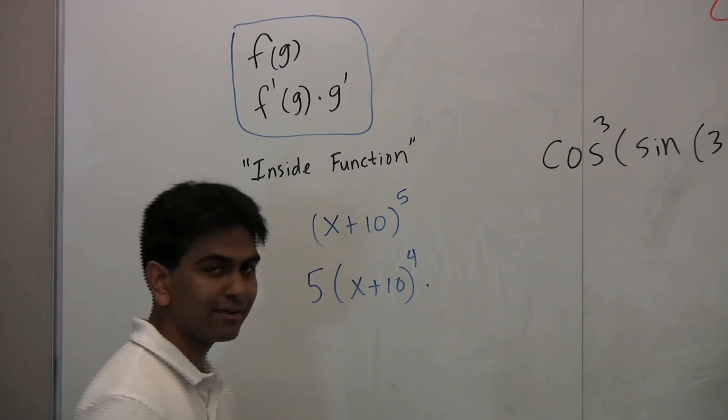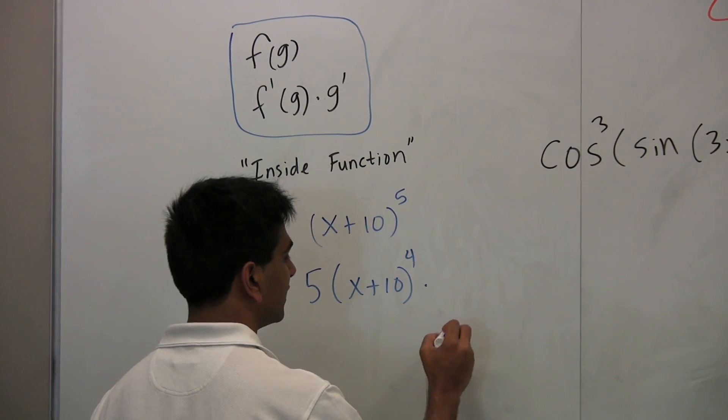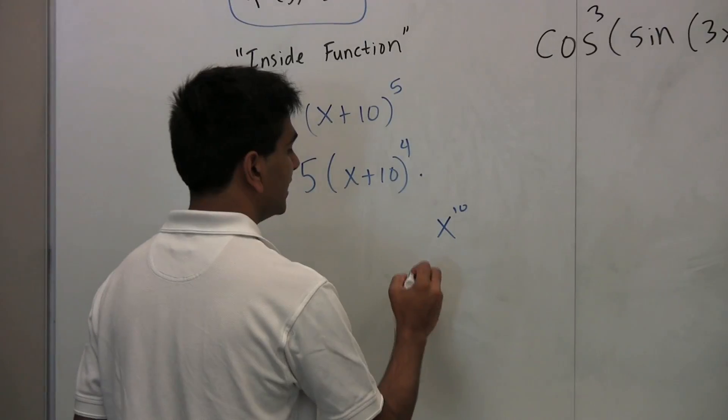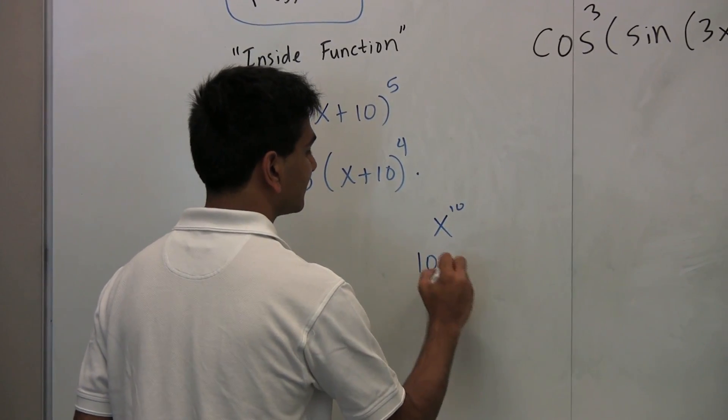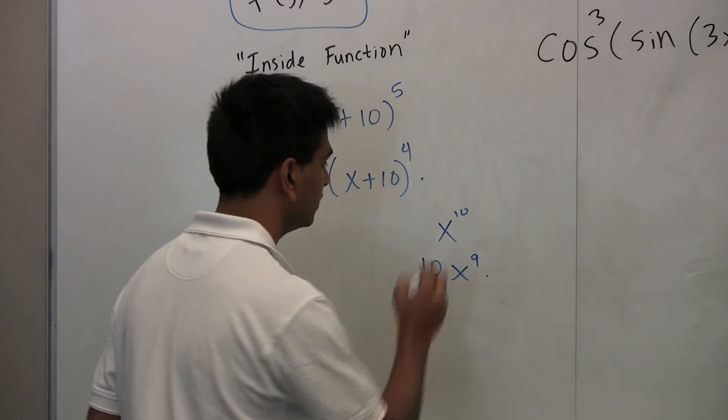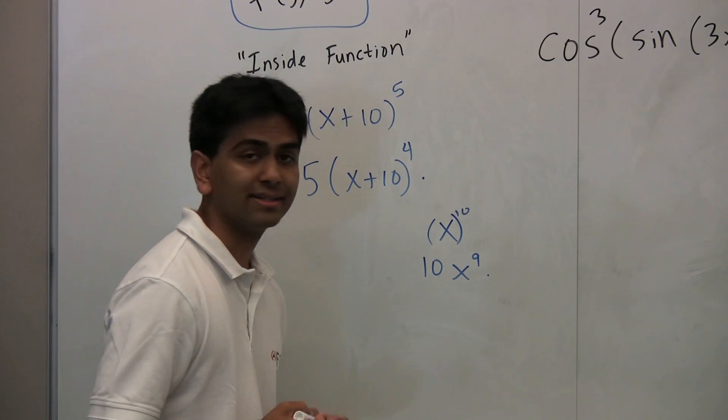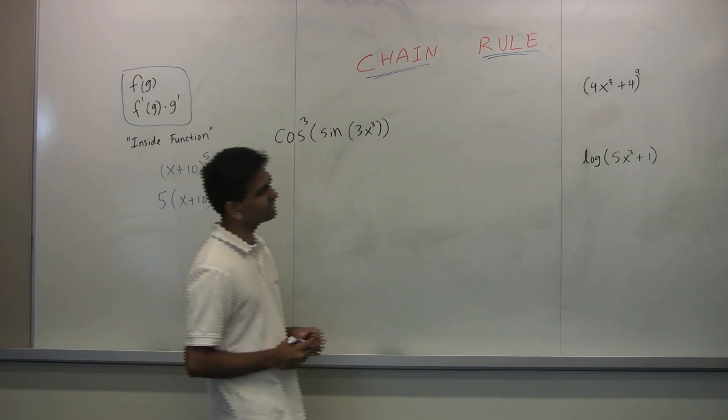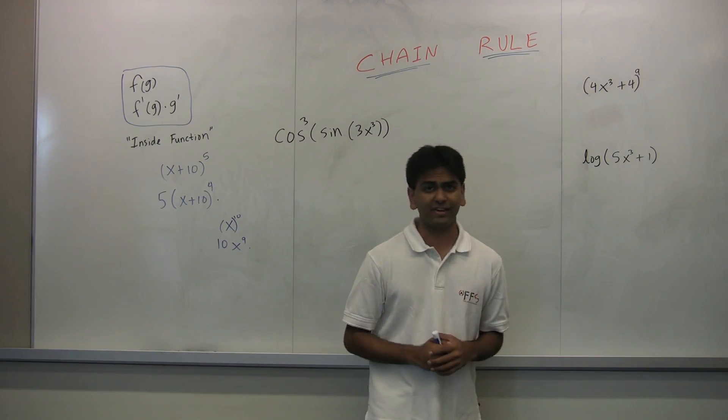So you do that every time if you think about it. If you ask what the derivative of x^10 is and we say 10x^9, you're still at the end multiplying by the derivative of the inside function, which in this case is just x, so 1. That's why you get 10x^9. So let's look at a few examples. Hopefully this clarifies things.